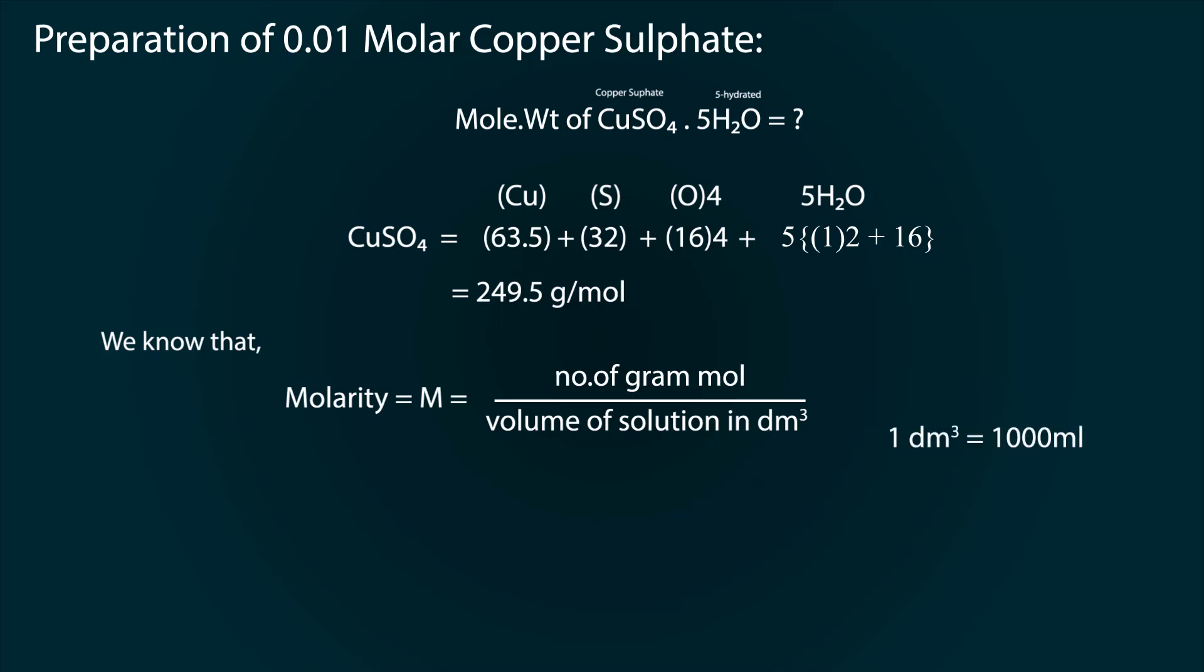1 cubic decimeter is equal to 1000 milliliters. So for 1 molar we need to dissolve 249.5 grams in 1000 milliliters of distilled water.